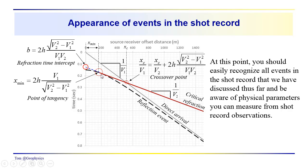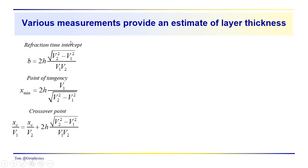If we extend this critical refraction over to the time axis — the t, x-equals-zero axis — we get the intercept term. The intercept b equals 2h times the square root of V2 squared minus V1 squared, all over V1 times V2. We'll often see this radical — it's pretty common. So we have these different relationships for the intercept, the minimum distance, the crossover distance, and so on.